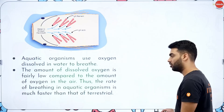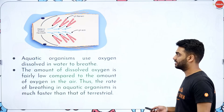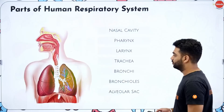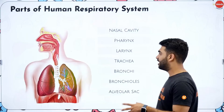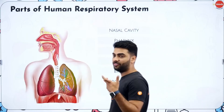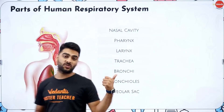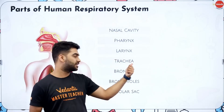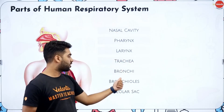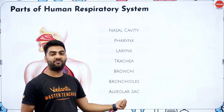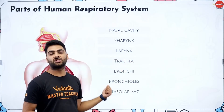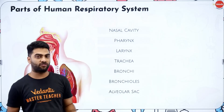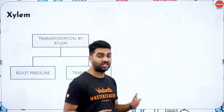Aquatic organisms absorb oxygen from water and breathe faster compared to terrestrial organisms. The respiratory system includes the nasal cavity, pharynx, larynx (the voice box with vocal cords), trachea, bronchi, bronchioles, and alveolar sacs. The alveoli are the fundamental unit of the respiratory system where the actual exchange of oxygen and carbon dioxide with hemoglobin happens.